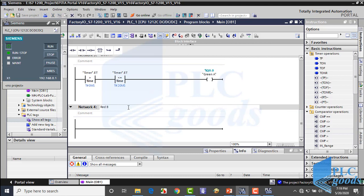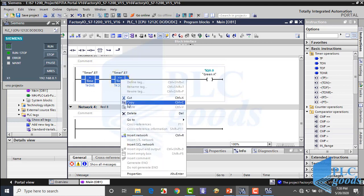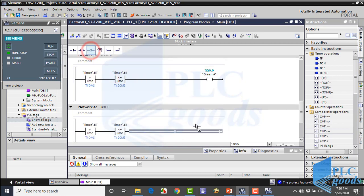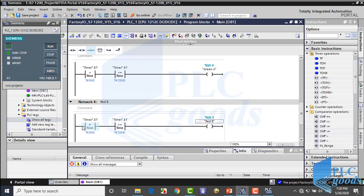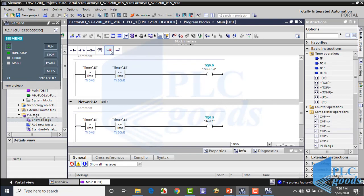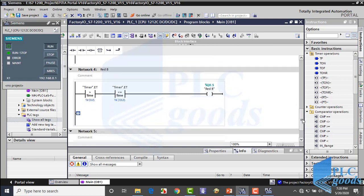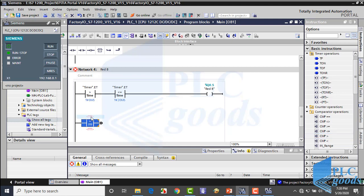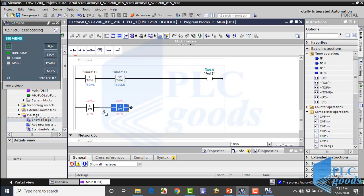So in this network, I'm going to write all conditions which turn on the red B. The first condition is similar to the previous network. The second condition is when the time is greater than 20 and less than 25 seconds.